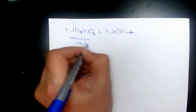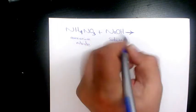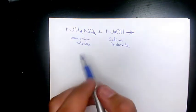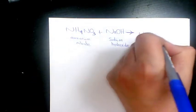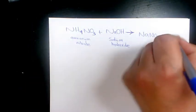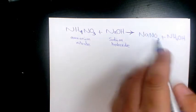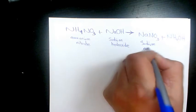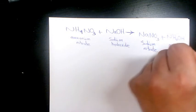And NaOH is sodium hydroxide. What are going to be the products? The product is going to be NaNO3 plus NH4OH. NaNO3 is sodium nitrate and NH4OH is ammonium hydroxide.